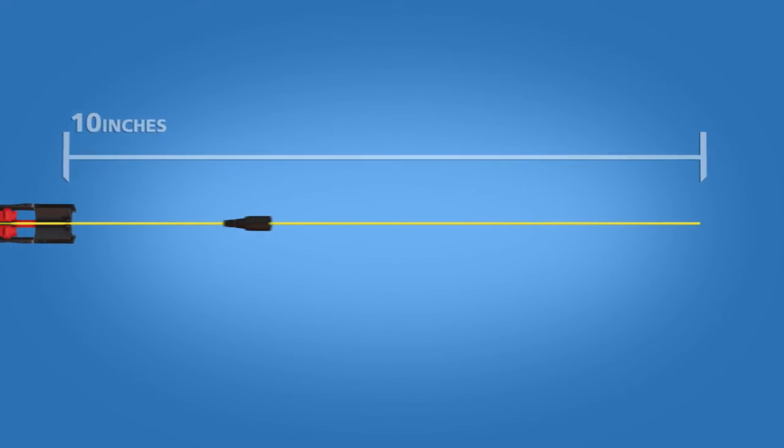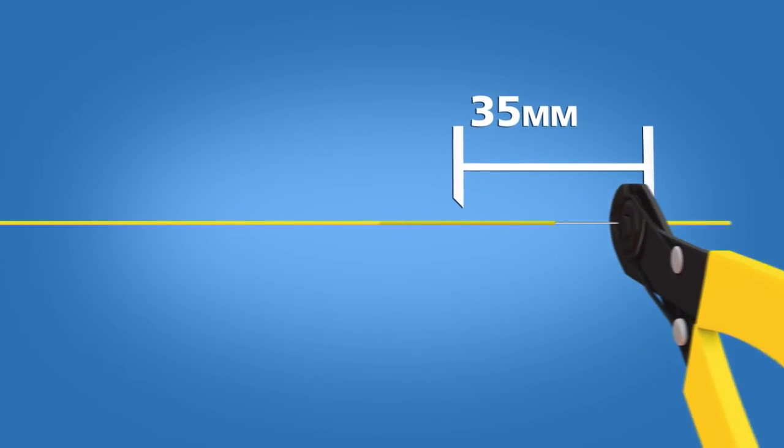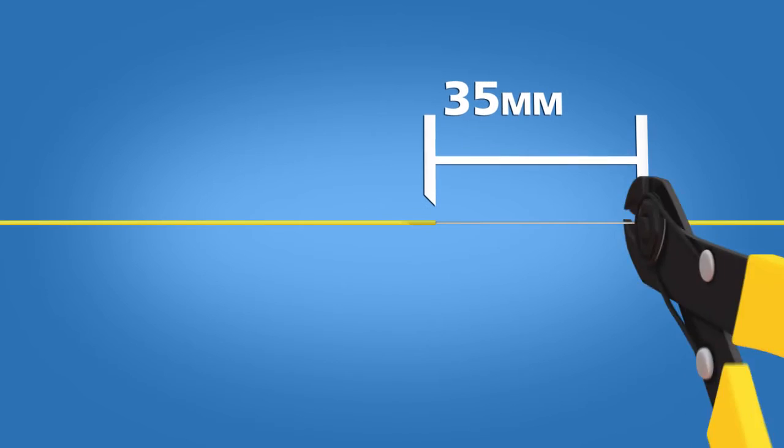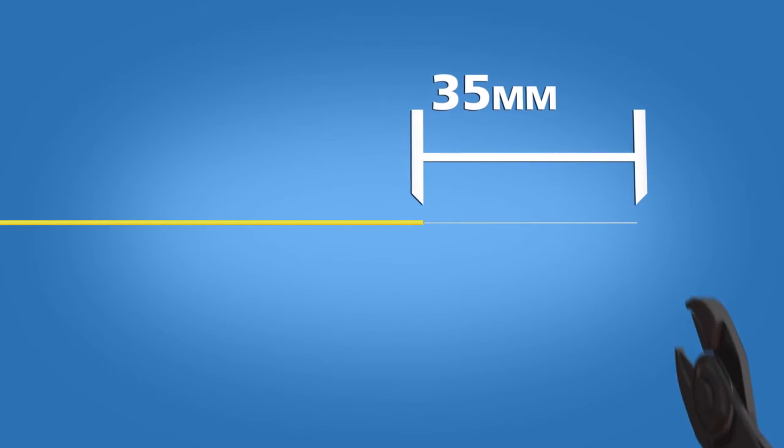Place the 900 micron boot onto the cable. Strip 35 millimeters of 900 micron and 250 micron coating off.